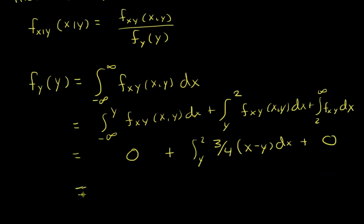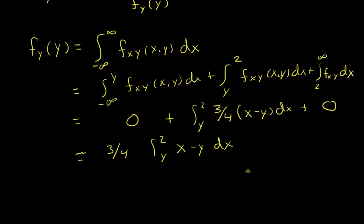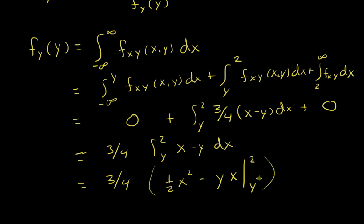Let's pull out that three-fourths. I'm integrating from y to 2 of (x minus y) dx. Integrating with respect to x, this becomes one-half x squared minus y times x, evaluated from y to 2.